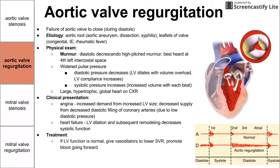We treat aortic valve regurgitation with vasodilators. This lowers systemic vascular resistance and promotes blood going in the proper direction — forward. If left ventricular function is very impaired with an ejection fraction less than 50, we can repair the aortic valve with surgery.